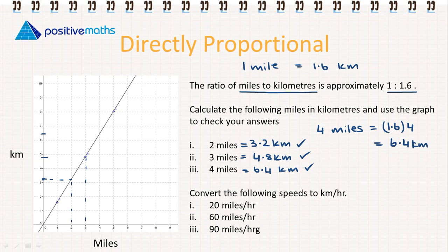The next part we need to convert the following speeds to kilometers per hour. We'll take our ratio again, so 1 is to 1.6. So again we know 1 mile is equal to 1.6 kilometers.